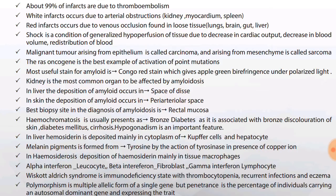Malignant tumor arising from epithelium is called carcinoma and arising from mesenchyme is called sarcoma. The RAS oncogene is the best example of activation of point mutations. Just remember, the points may look simple, but in between them the repeatedly asked questions and complex bits are covered. Follow these 2000 points and you will get the overall area of all subjects.